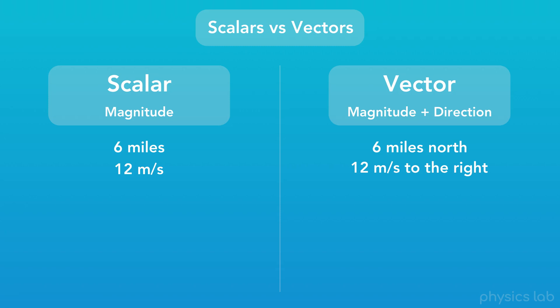That's because they tell us the magnitude, like 6 miles, as well as a direction, like north. If you take a scalar quantity and add a direction to it, you turn it into a vector.